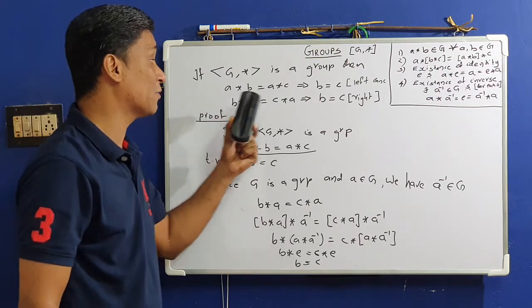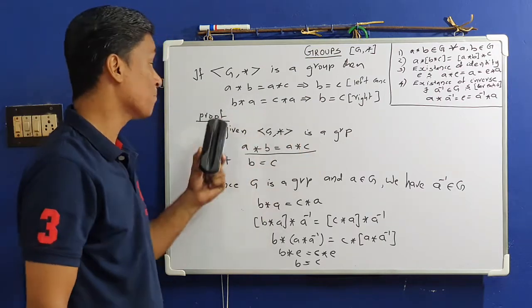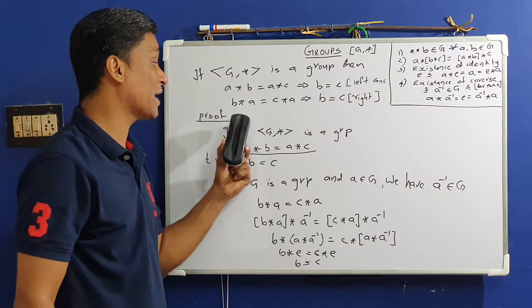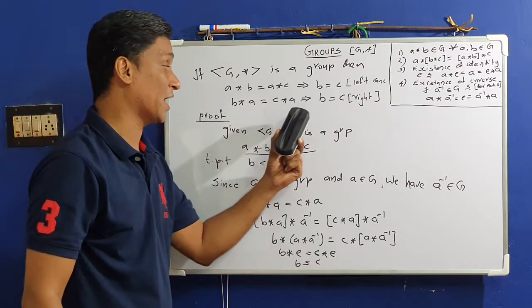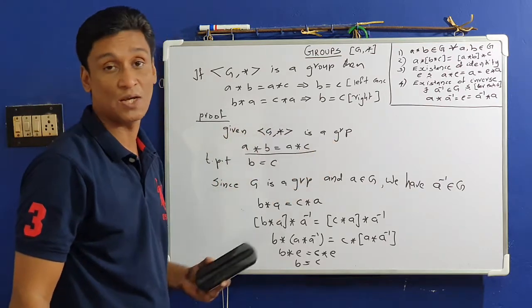To summarize: A★B = A★C implies B = C (left cancellation law), and B★A = C★A implies B = C (right cancellation law).